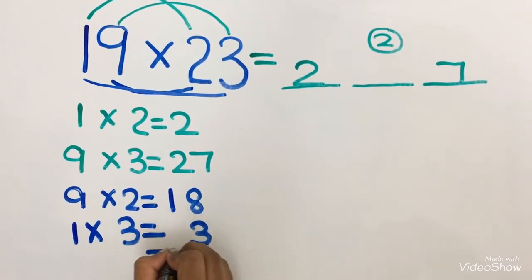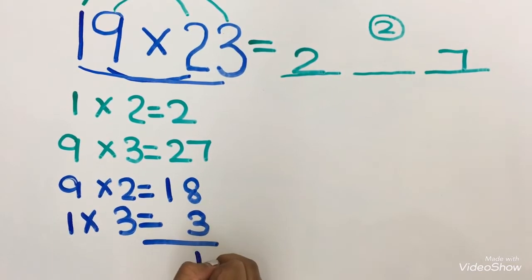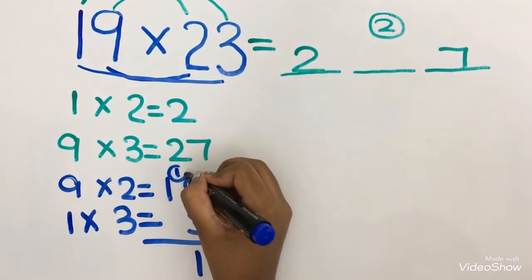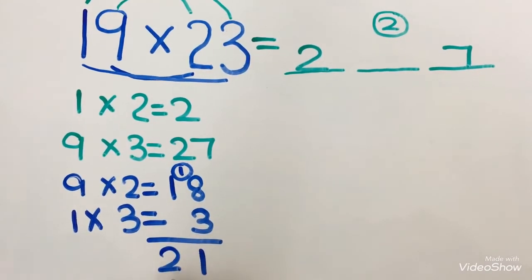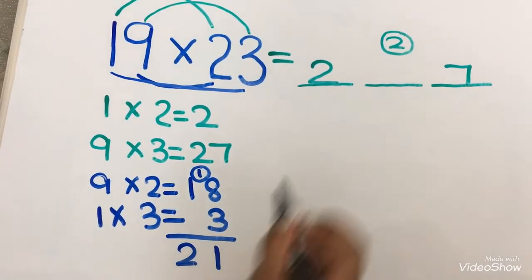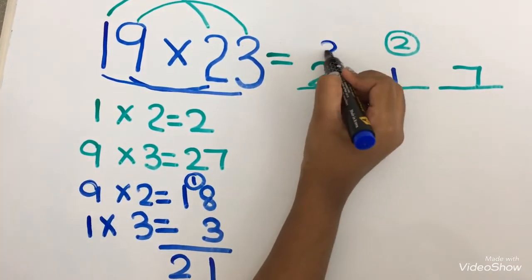Now we are going to add it. 8 plus 3 equals to 11. So 1, 1 carryover over here. Then 1 plus 1 equals to 2. This 1 I am going to put it over here. This 2 I am going to put it as a carryover.